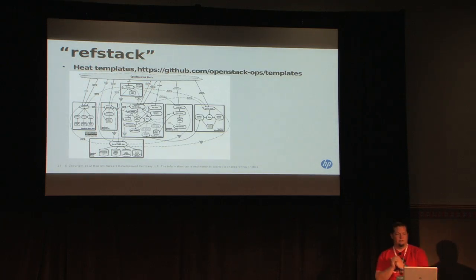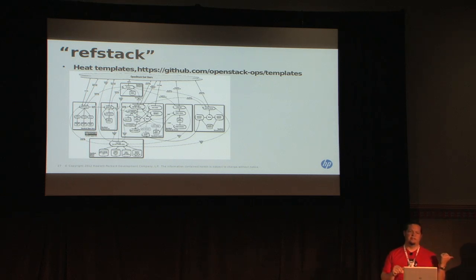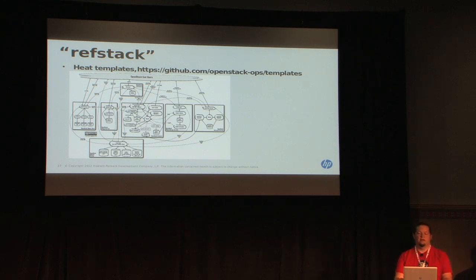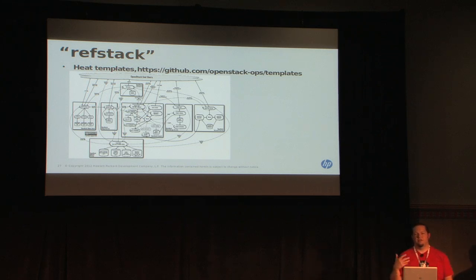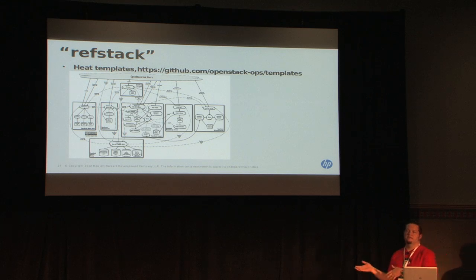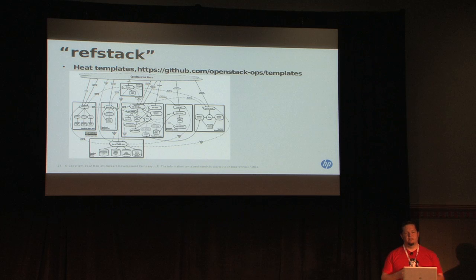There's a great effort going on to define in Heat templates a reference deployment of OpenStack. That's being championed by Monty Taylor, who's also working on Triple O, and Rob Hirschfeld, one of the architects of Crowbar. The idea is to use one single template format to drive multiple deployment engines. We should be able to get there if we stay declarative religiously.